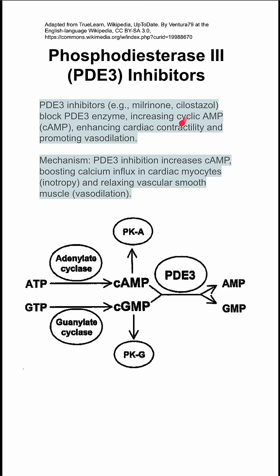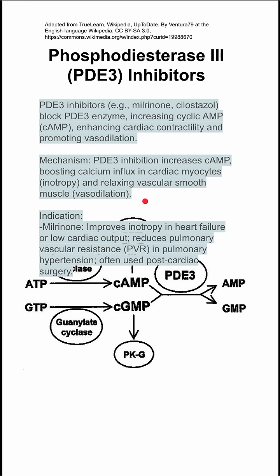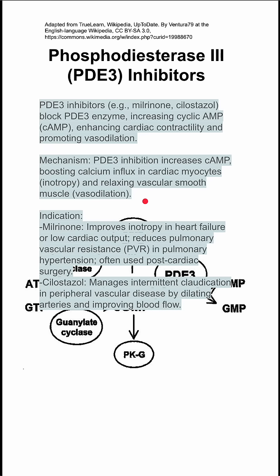The mechanism: PDE3 is inhibited, which increases cyclic AMP and boosts calcium influx in cardiac myocytes, producing inotropy, and relaxes vascular smooth muscle, causing vasodilation. The indication for milrinone is that it improves inotropy in heart failure or low cardiac output.